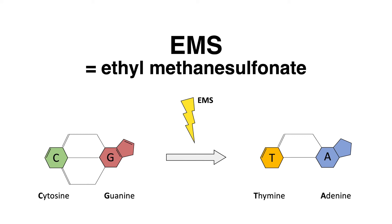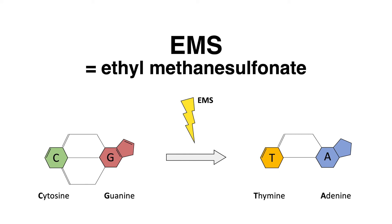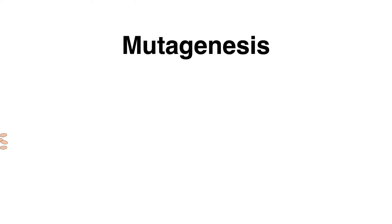These random mutations occur in different regions throughout the whole genome. Mutations can disrupt the function of genes or modify gene products in various manners. EMS as a potent mutagen is used to screen for beneficial mutations.